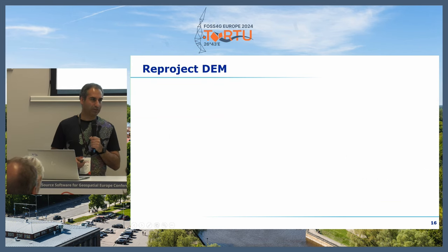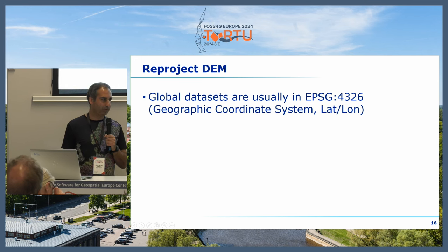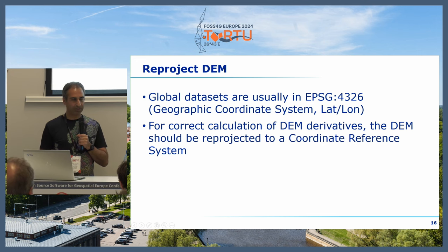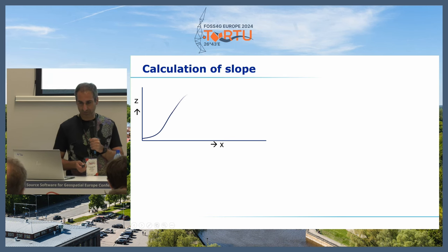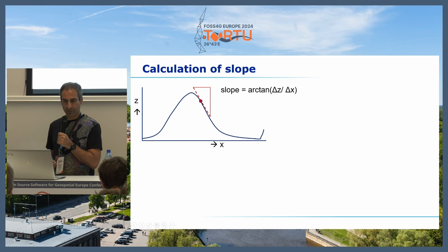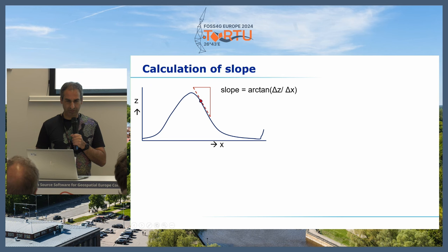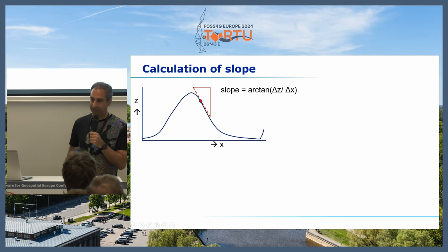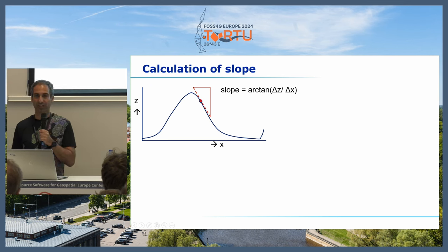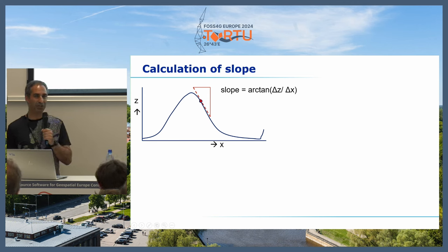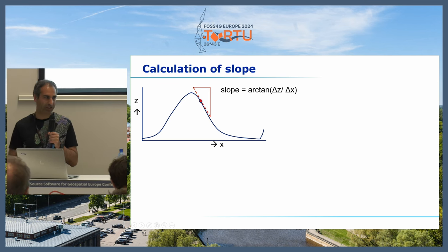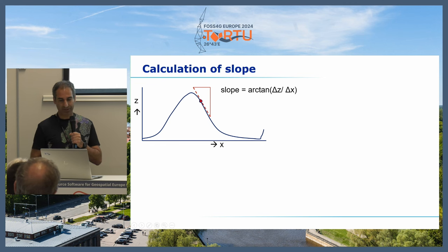There's a problem with DEMs downloaded from the internet: they often use the geographic coordinate system, which is not useful for hydrological applications because they need to be projected to a coordinate reference system. When you calculate a slope — doing dz over dx with the arc tangent to get degrees — the problem is that if you have the geographic coordinate system, your x and y units are in degrees (latitude/longitude) while your z units are in meters of elevation. Most of these algorithms will still run and produce beautiful maps with nice colors, but completely wrong. Always reproject your DEM to a projected coordinate reference system to avoid this.